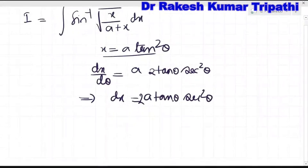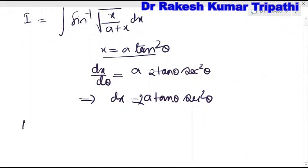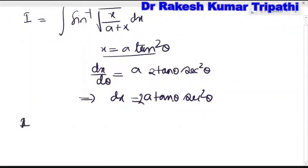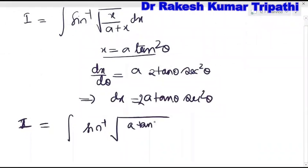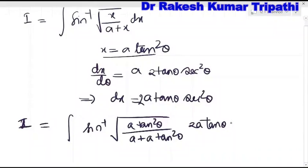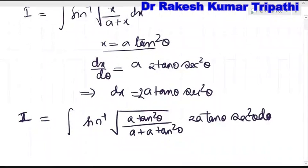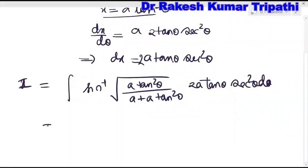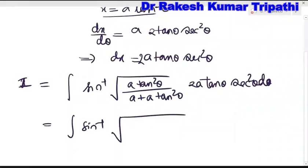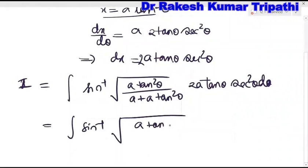Therefore the integral becomes I = sin⁻¹(√(a·tan²θ / (a + a·tan²θ))) · 2a·tanθ·sec²θ dθ. We can take 'a' as common from the denominator, so it becomes 1 + tan²θ.